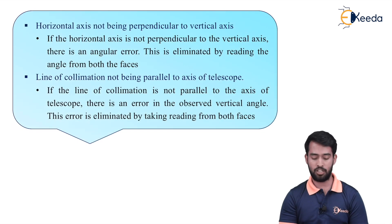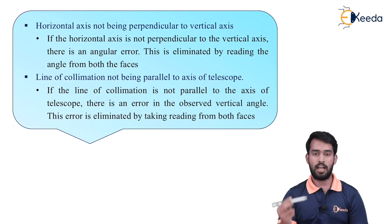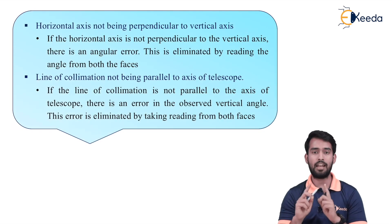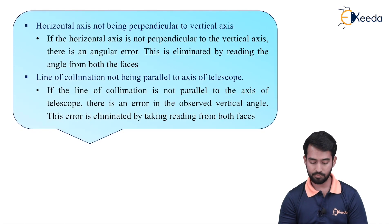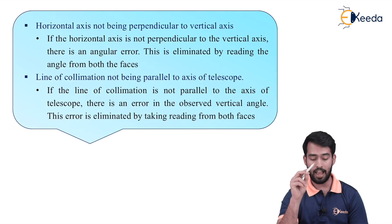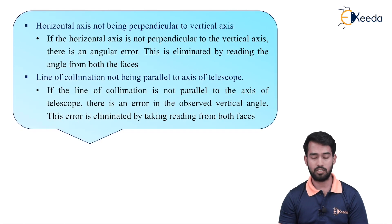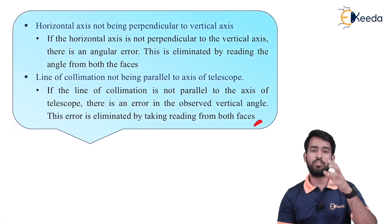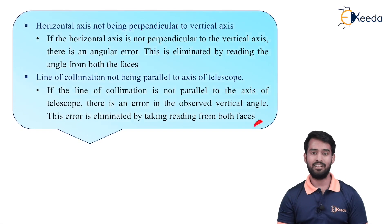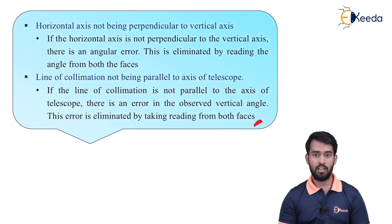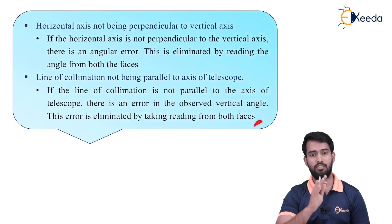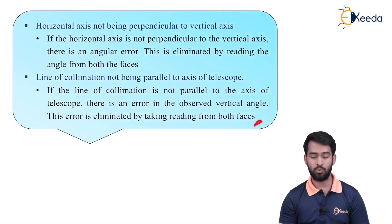Next is the line of collimation not being parallel to the axis of the telescope. The axis of the telescope and the line of collimation should be parallel to each other. If they are not, there will be an error in the observation of the vertical angle. This error can be eliminated by taking readings from both faces of the vertical circle — face C and face D, face left as well as face right — using two verniers and two faces.